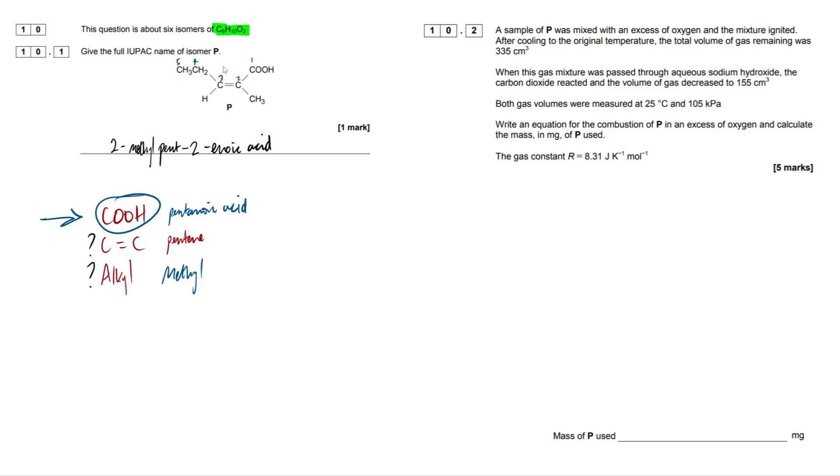Now, when the highest priority groups are on the same side of the molecule, which are these two right here, our ethyl group and our carboxylic acid group, this makes it a Z isomer. So, our full name would be Z-2-methylpent-2-enoic acid.